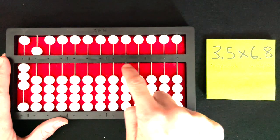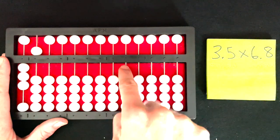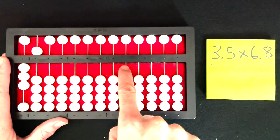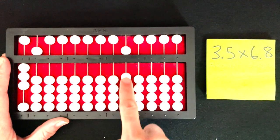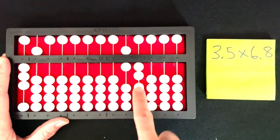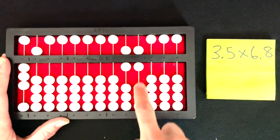68 times 35. I'm going to start by setting the 6 here in my ten thousands rod. So we say 1, 2, 3, 4, 5, 6, 1, 2, 3, 4, 5, 6, 7, 8.